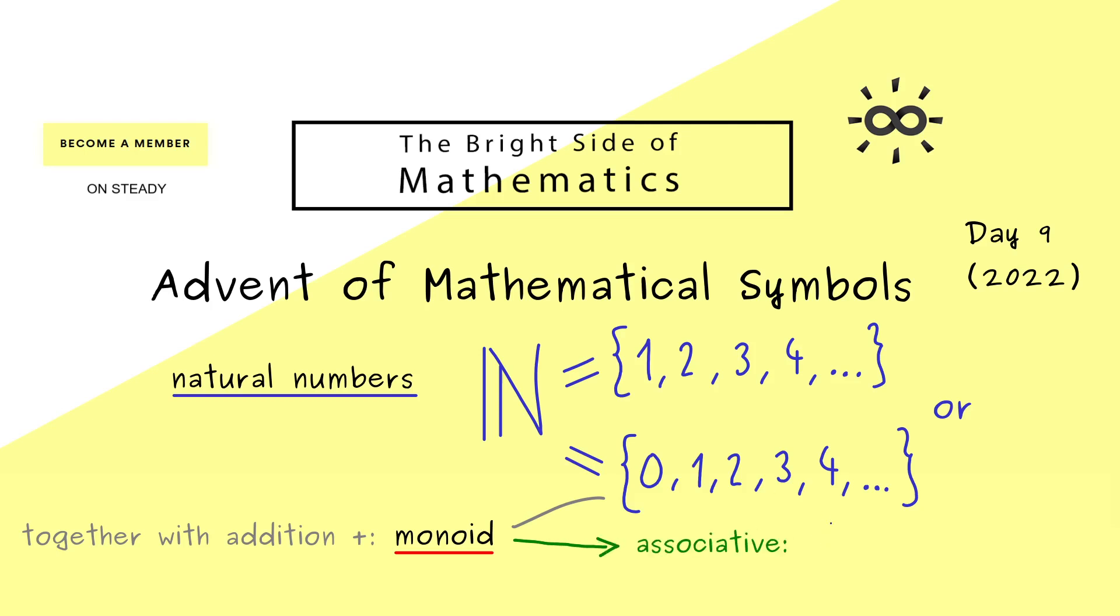First, it's an associative operator when we add three numbers. So we have a, b, and c as natural numbers, and then we get the equality for these two expressions where we just add the three numbers. It means we can set parentheses as we want without changing the result. This property is called associativity.